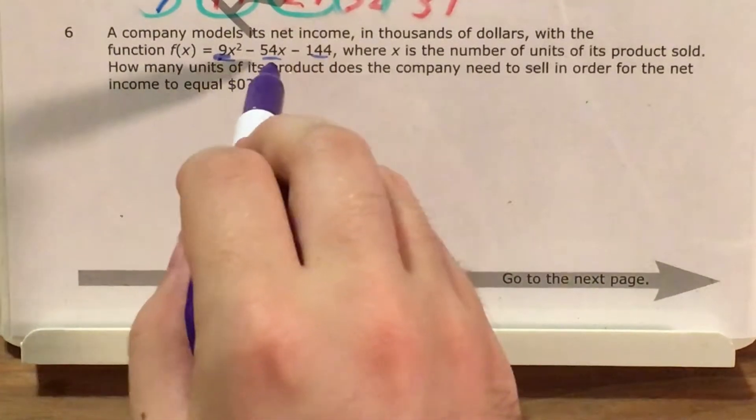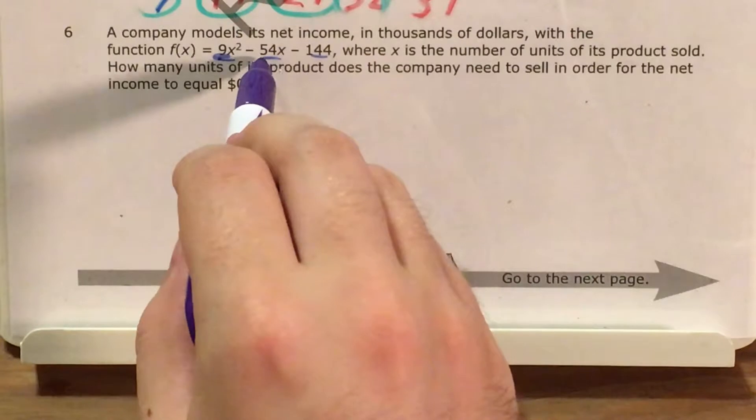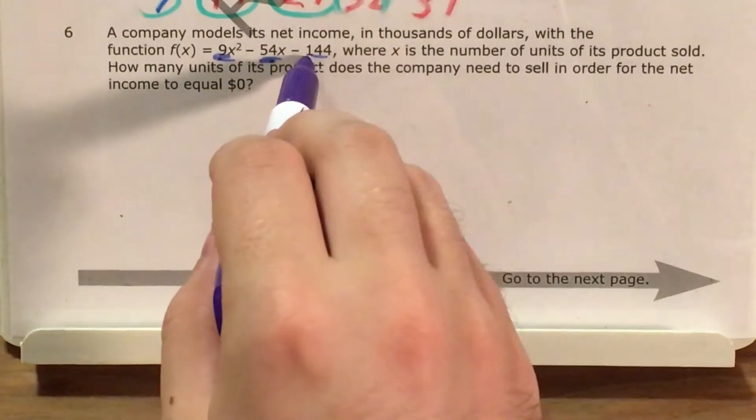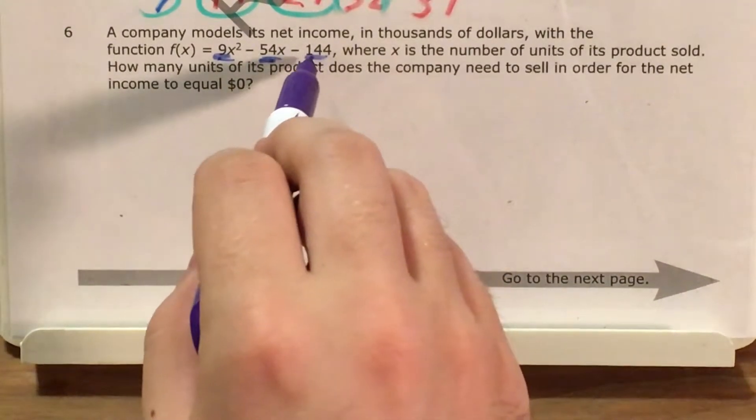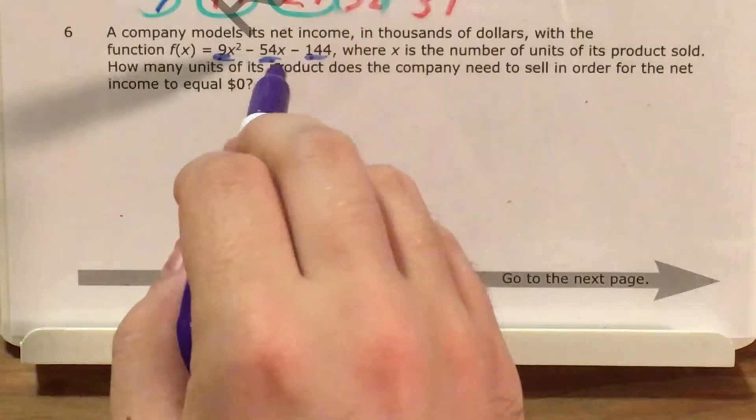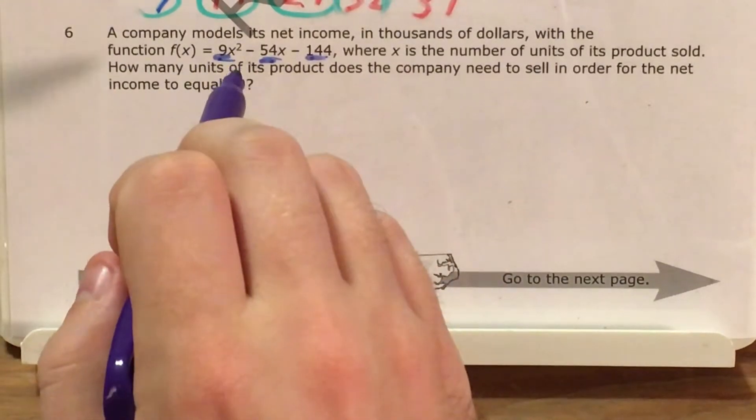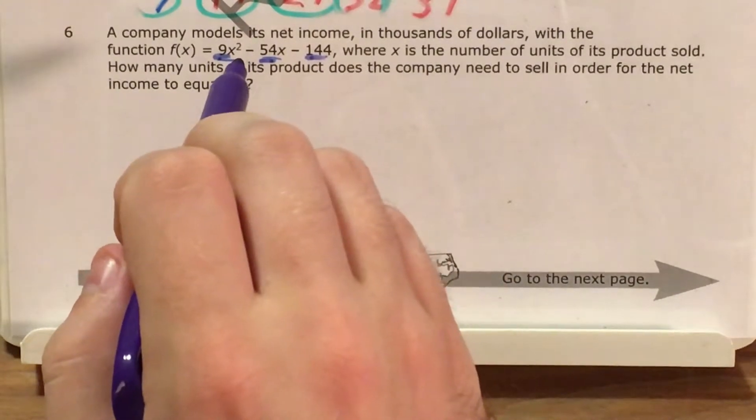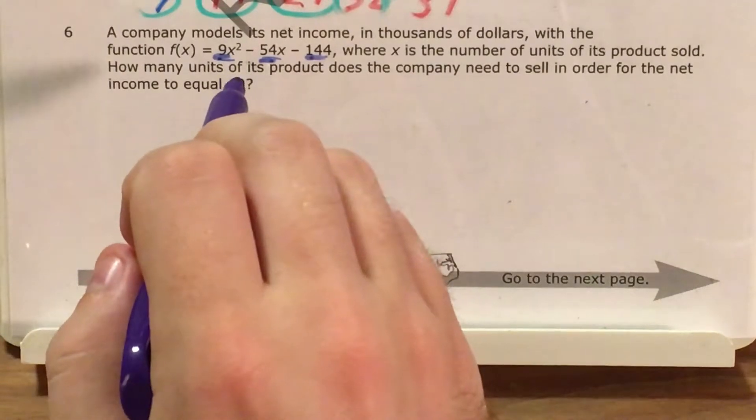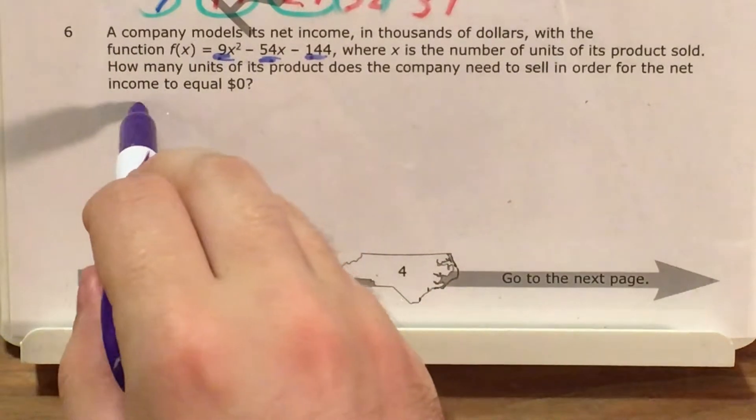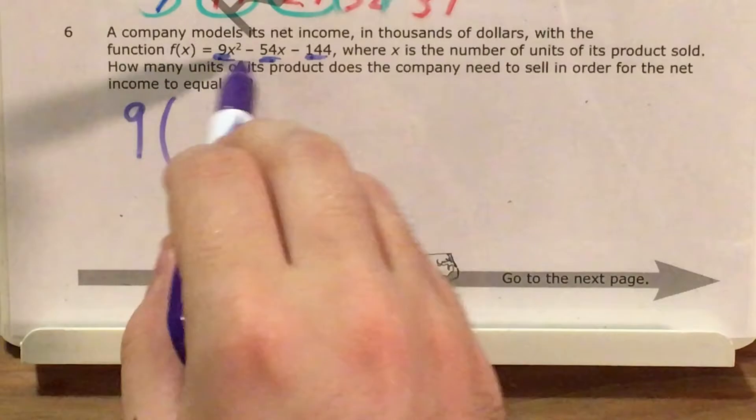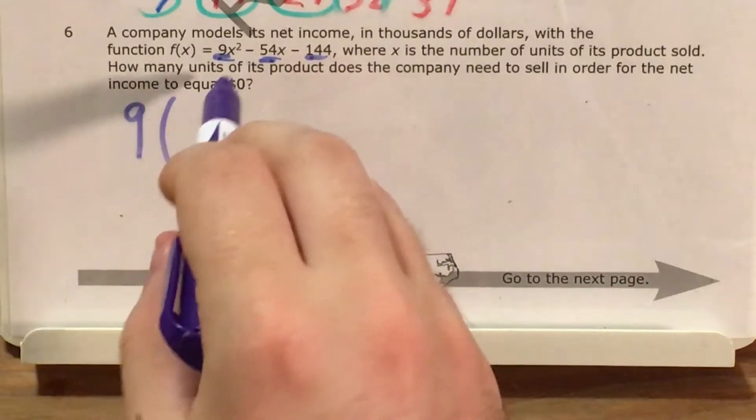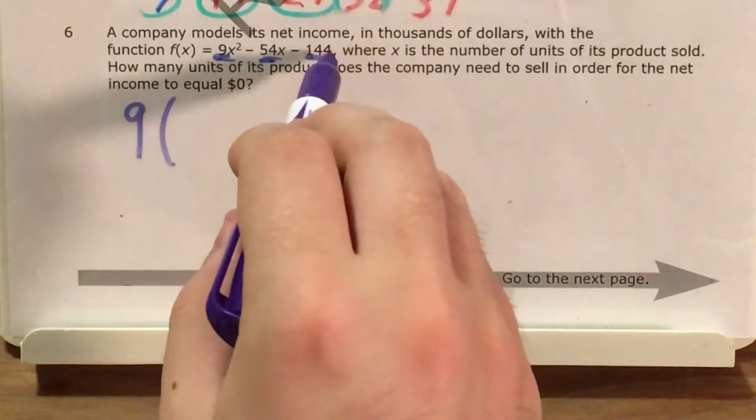So 9 obviously works. 54, 5 plus 4 equals 9. And then 144 is 1 plus 4 plus 4, which also equals 9. So using that rule of divisibility by 9s that you might have forgotten since whenever you learned it in, I would guess, elementary or middle school, we can actually figure out that 9 is a common factor of each of our coefficients and divide each of our coefficients by 9.